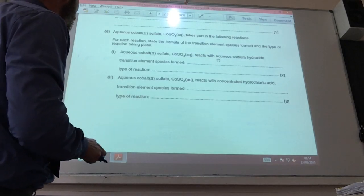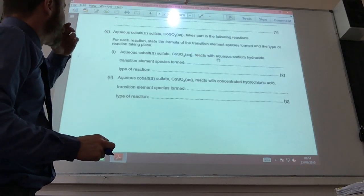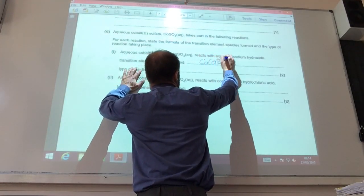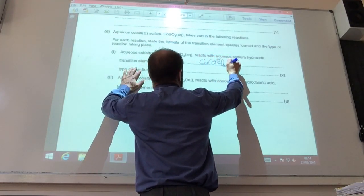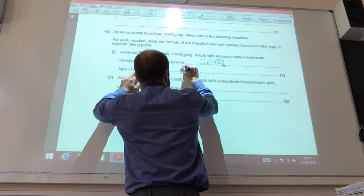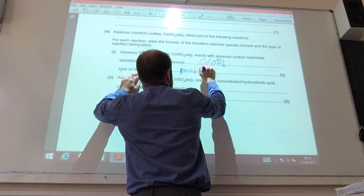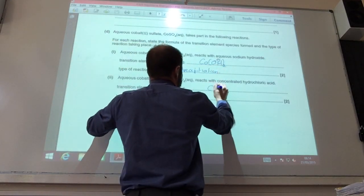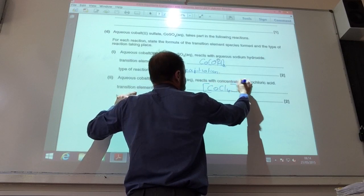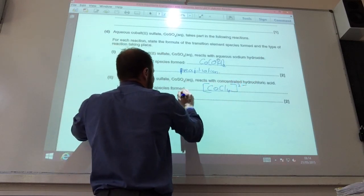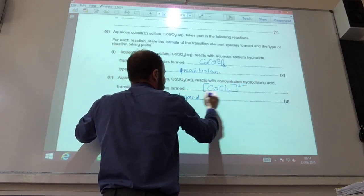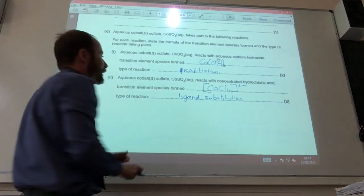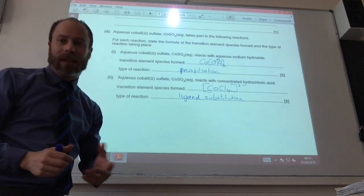Some chemistry of cobalt 2 plus. Reaction with sodium hydroxide is going to form cobalt hydroxide as a solid. The type of reaction is, of course, a precipitation reaction. Reaction with concentrated HCl forms that species. The type of reaction is ligand substitution.